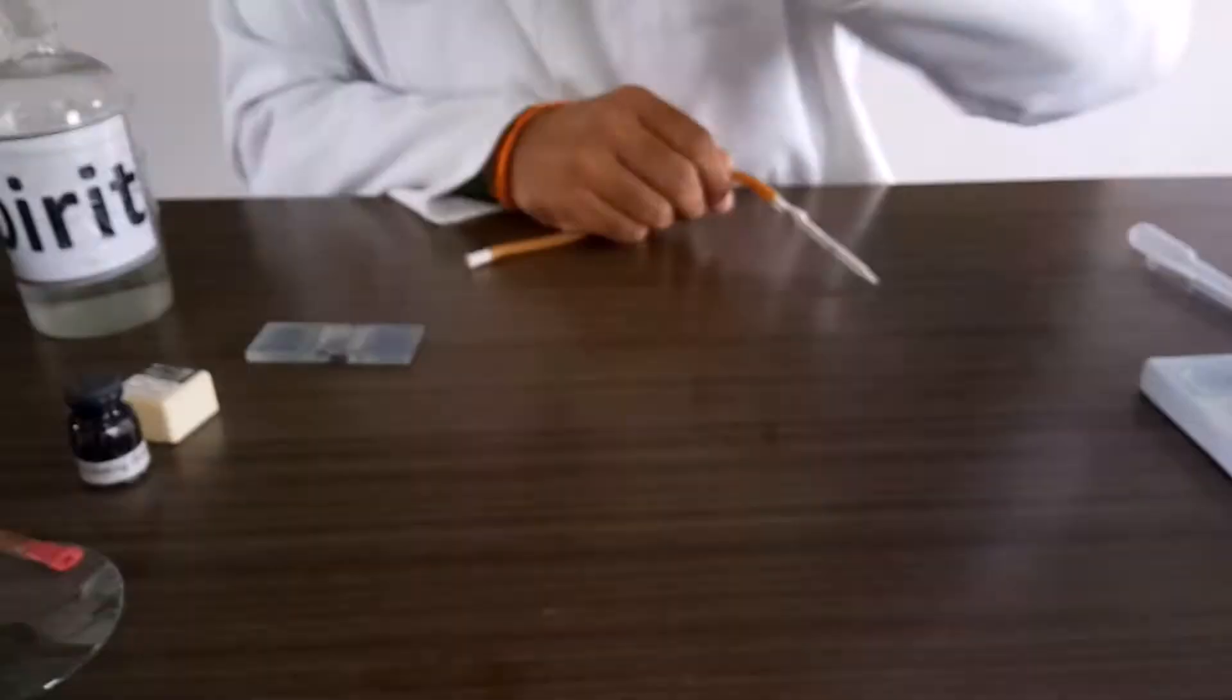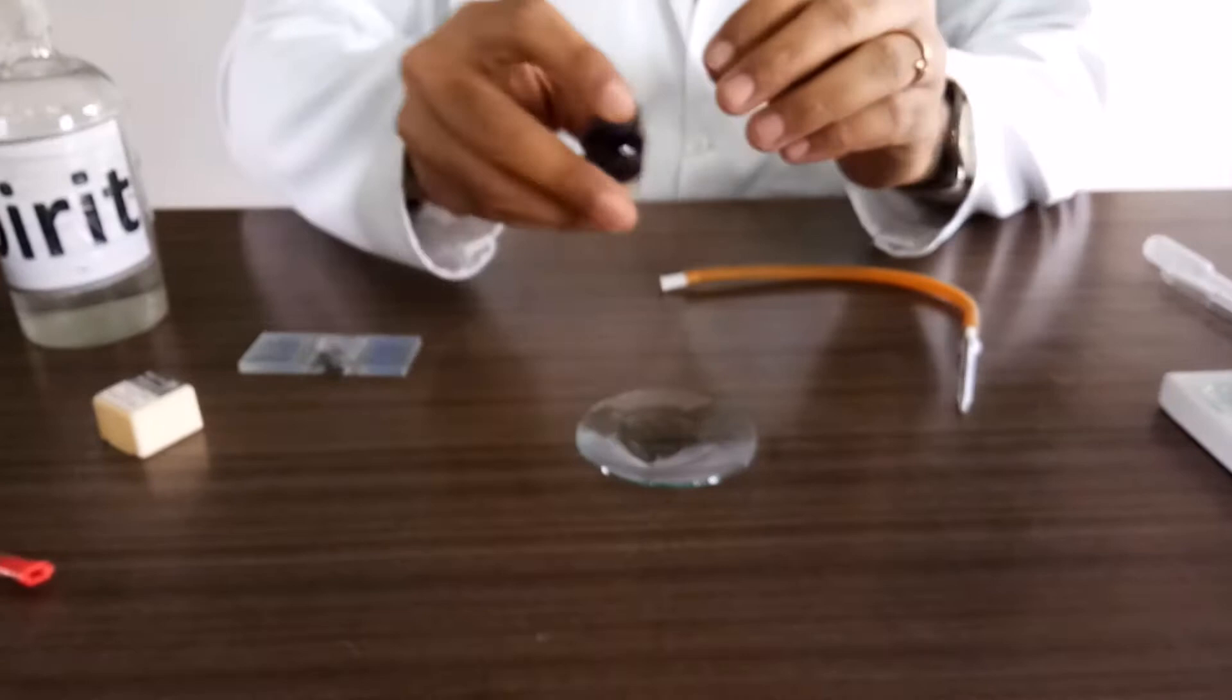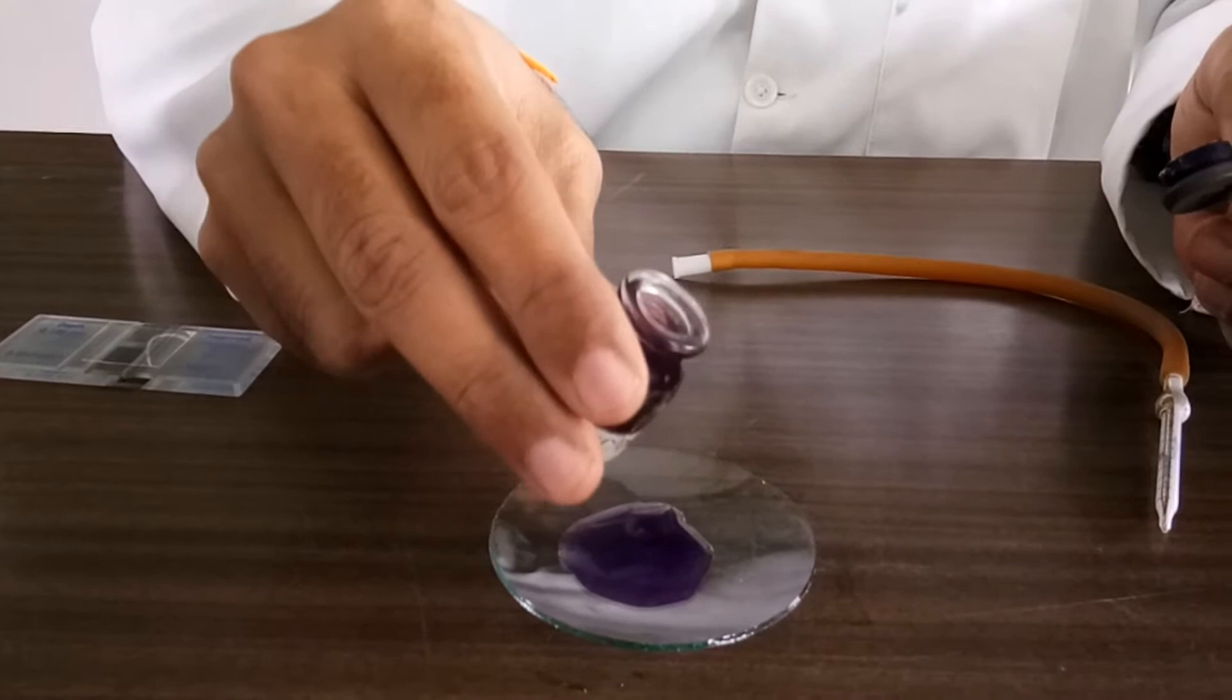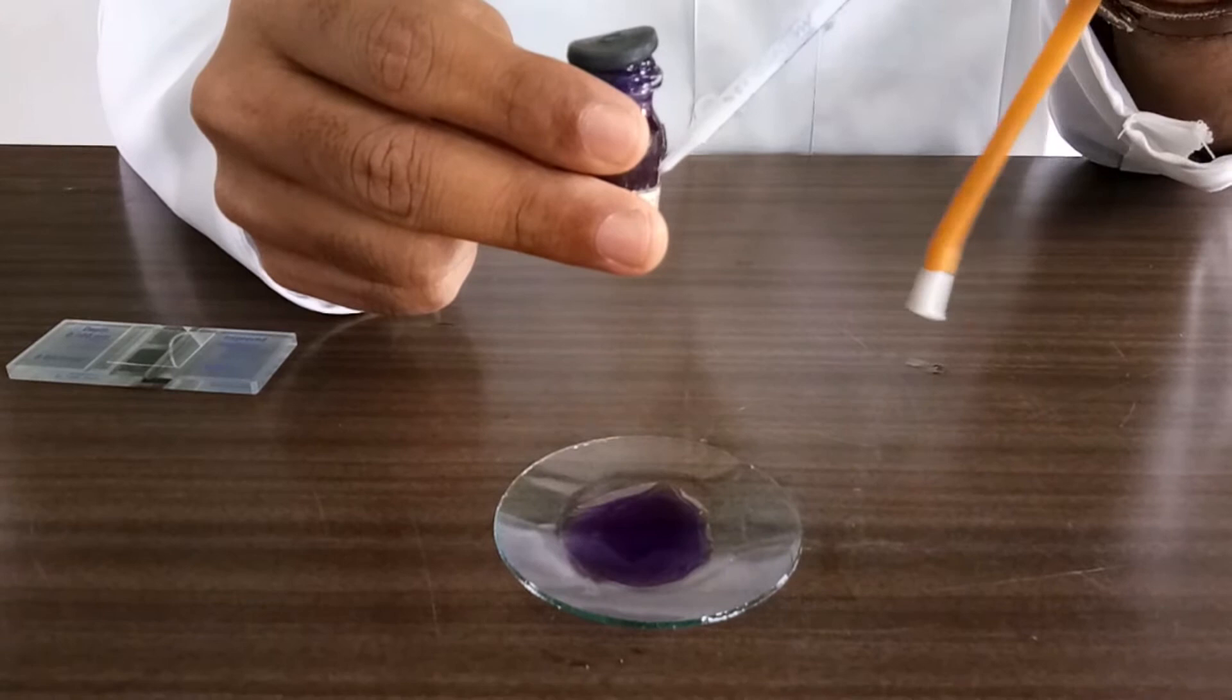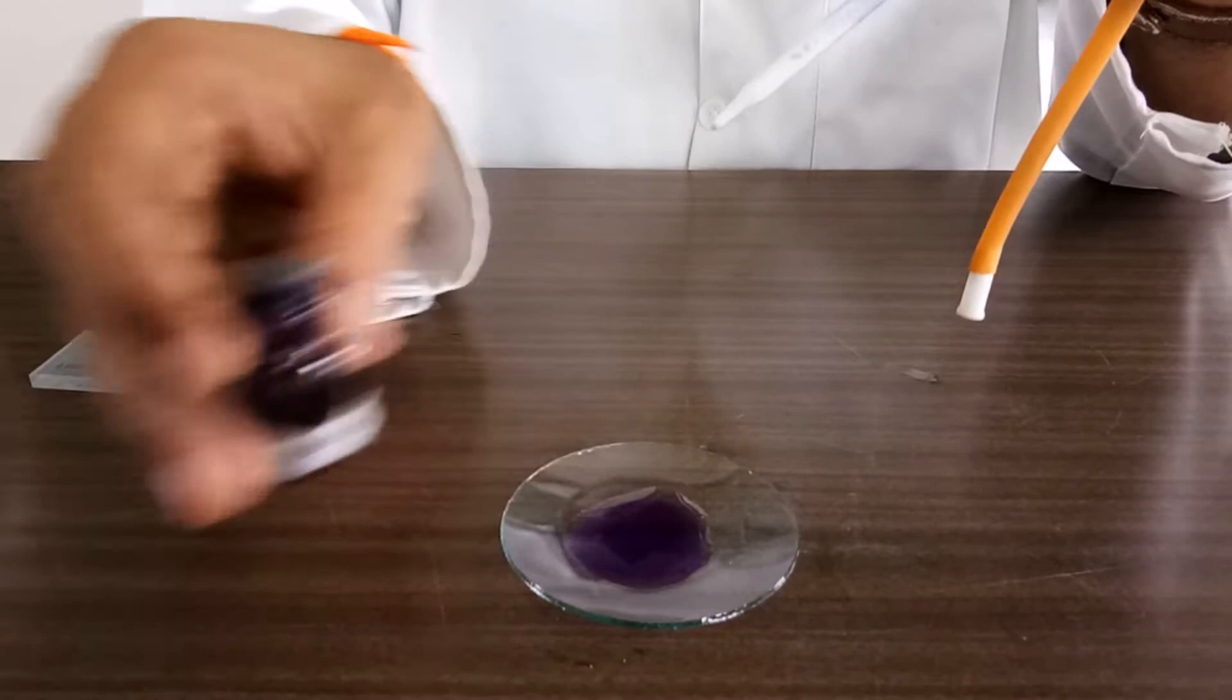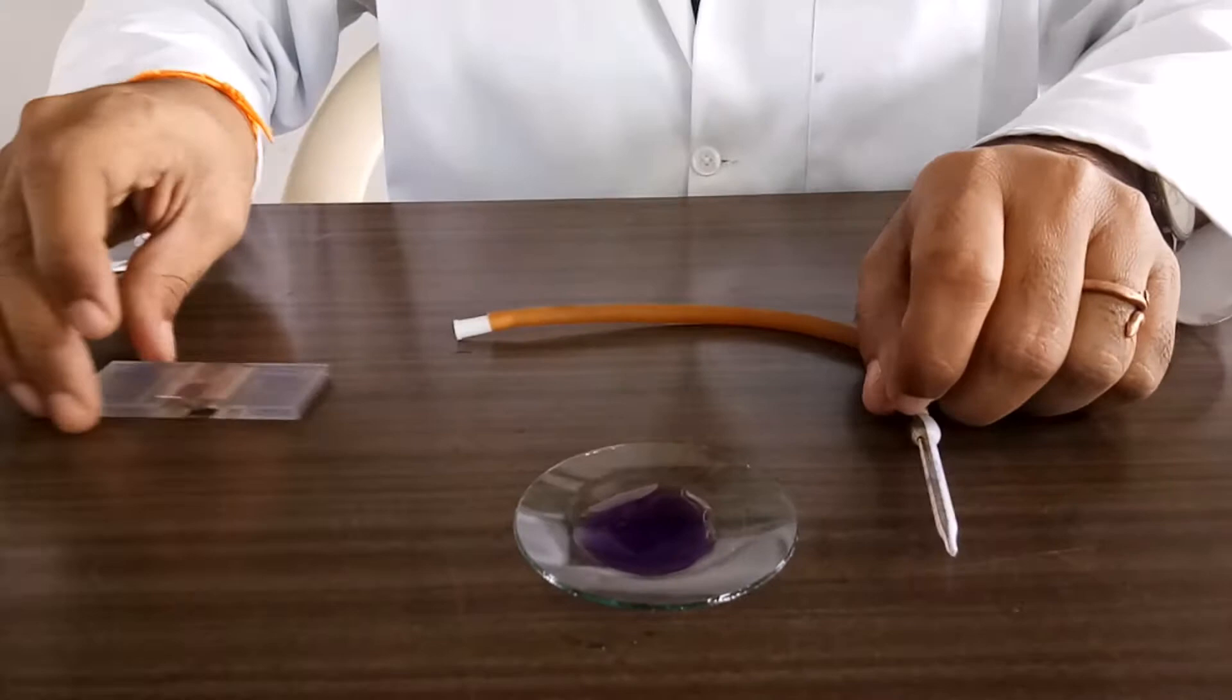Now close that particular box and keep it aside. Take the watch glass. Transfer the particular WBC diluting fluid. Transfer little amount which is required amount. Don't take entire. Don't contaminate the particular diluting fluid by inserting the sample or directly you can take the diluting fluid from here which is contaminate this entire bottle. So transfer adequate amount of diluting fluid which is required. The setup is now ready.